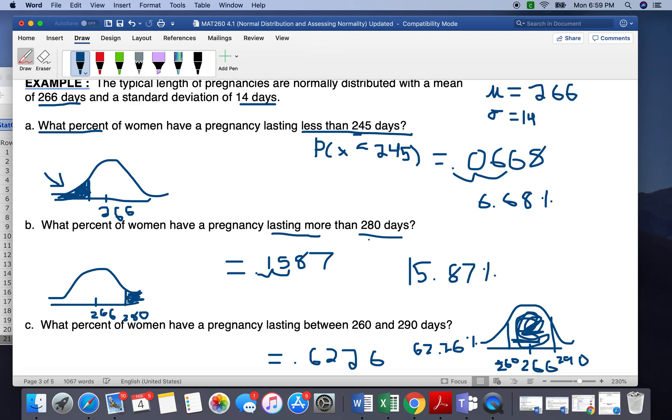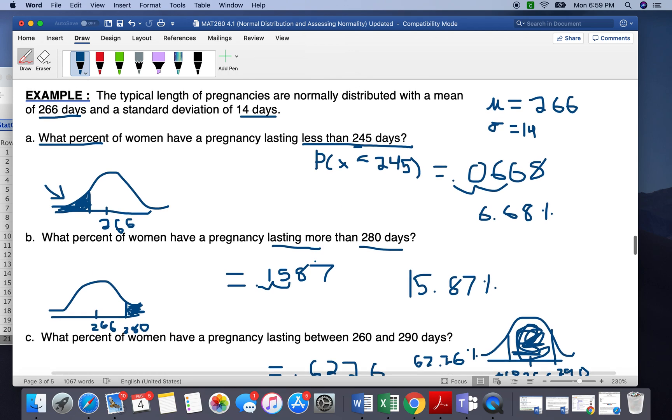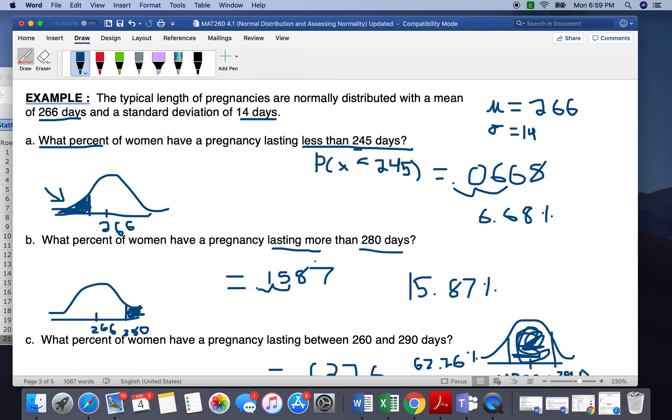So that is how we find areas and percentages for the normal curve using StatCrunch.